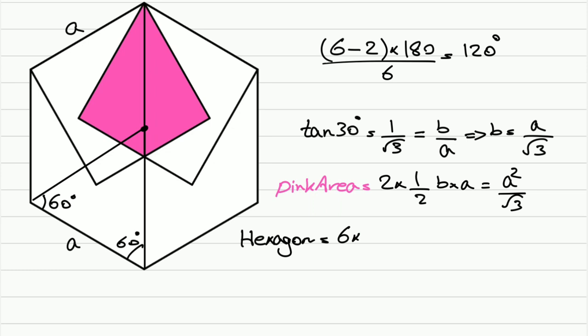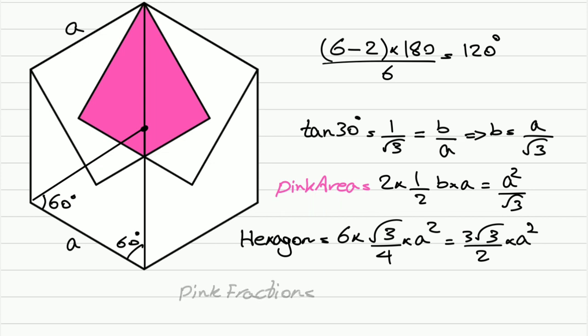Six times the formula for these triangles: square root 3 over 4 times side squared, where the side is a squared. That gives us 3 square root 3 over 2 times a squared.